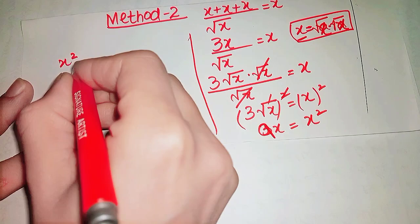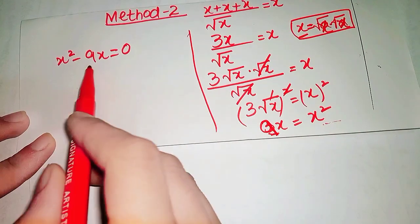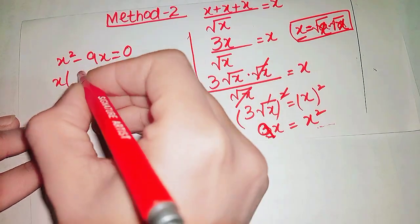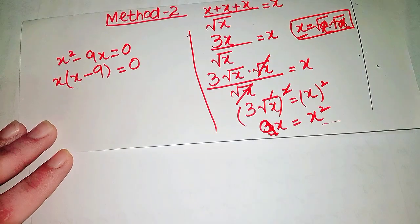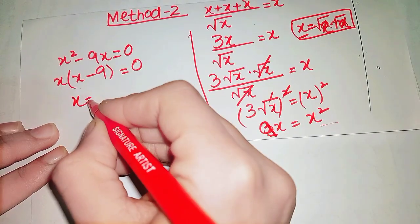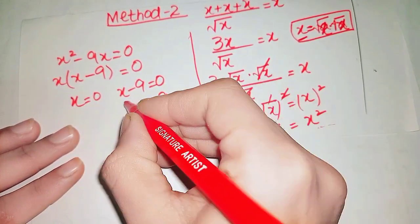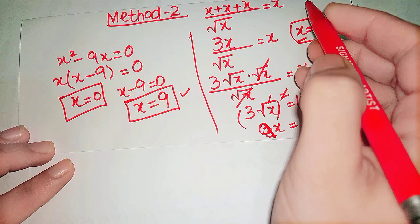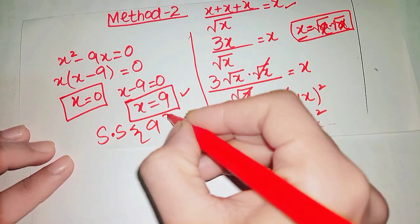Rearranging gives x squared minus 9x equals 0. We factor out x, getting x times (x minus 9) equals 0. This gives two values: x equals 0 and x equals 9. As already proved, x equals 9 is the solution set for the given equation.